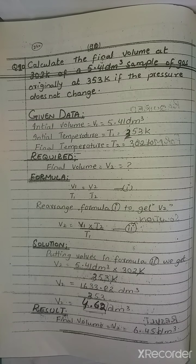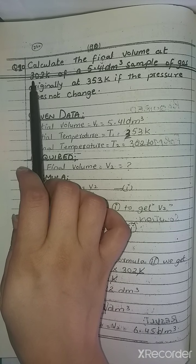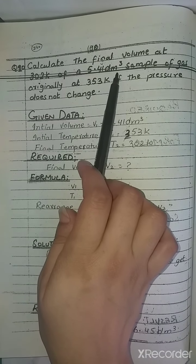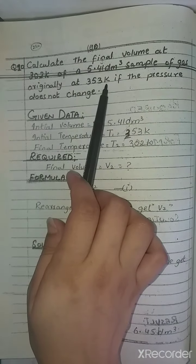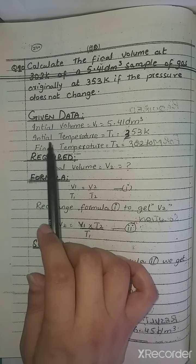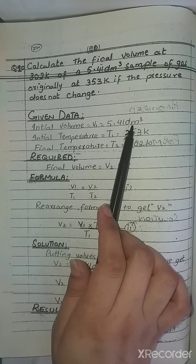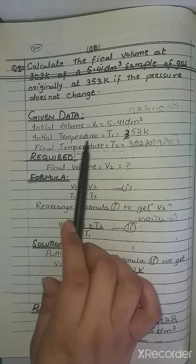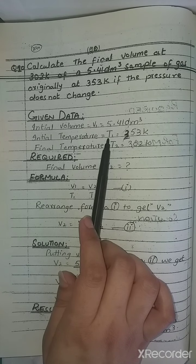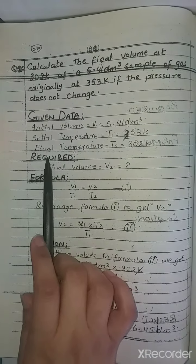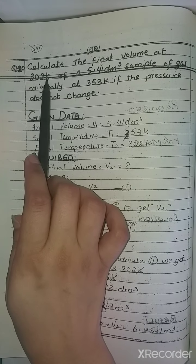Second numerical: calculate the final volume at 302 Kelvin of a 5.41 decimetre cube sample of gas originally at 353 Kelvin, if the pressure doesn't change. Given: V1 = 5.41 decimetre cube, T1 = 353 Kelvin, T2 = 302 Kelvin. Required: final volume V2. Using Charles's Law: V1/T1 = V2/T2, rearranging: V2 = V1 × T2 / T1.